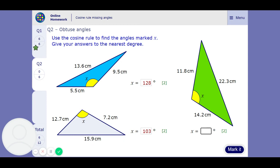And this last one. We've got 11.8 squared plus 14.2 squared take away 22.3 squared all over 2 times 11.8 times 14.2. It tells us 117.8 so 118.